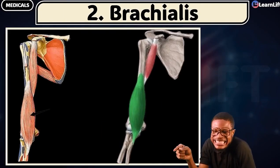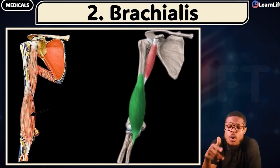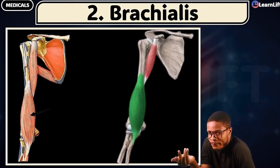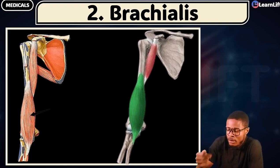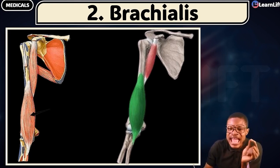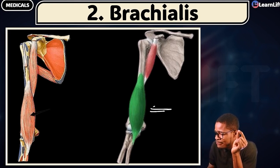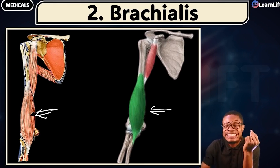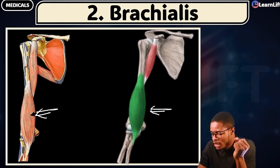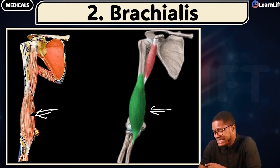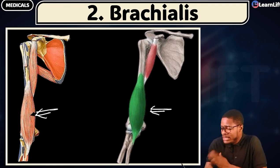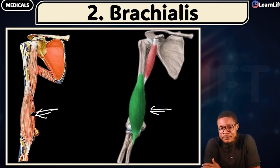If you get your biceps brachii, the second is called your brachialis. How does the name brachialis come about? Brachialis is gotten from 'brachium.' So that muscle in the arm — let me show you. This guy here is the brachialis. That's your brachialis — the muscle you see in the arm. Your biceps brachii is in the upper arm; brachialis comes more toward the lower arm.